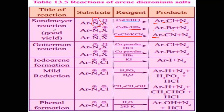Next is the Gattermann reaction. Here the substrate is the same — aryl diazonium halide — but copper powder is used instead of cuprous salts. With copper powder and HCl, we get chlorobenzene with N2 gas. With copper powder and HBr, we get bromobenzene. To prepare iodobenzene, we react aromatic benzene diazonium chloride with KI, and we get iodobenzene with N2 gas.